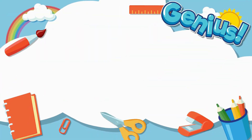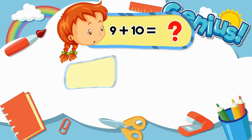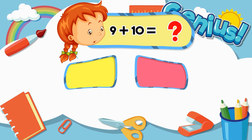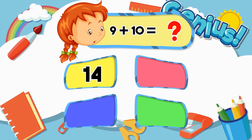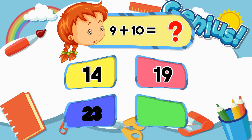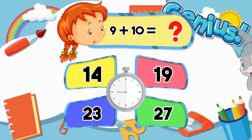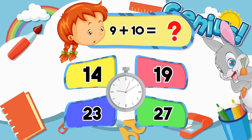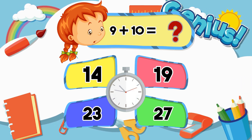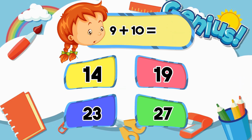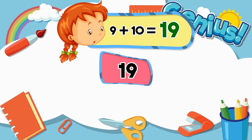What is 9 plus 10? 14, 19, 23, 27. Answer: 19.